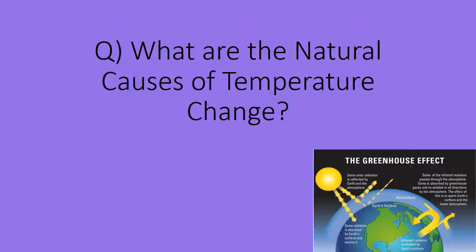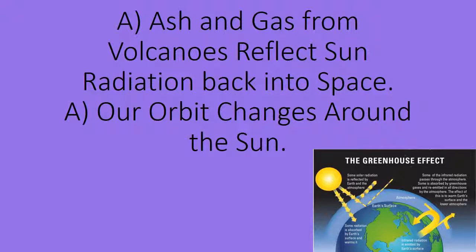What are the natural causes of temperature change? Ash and gas from volcanoes reflect sun radiation back into space. Our orbit changes around the sun.